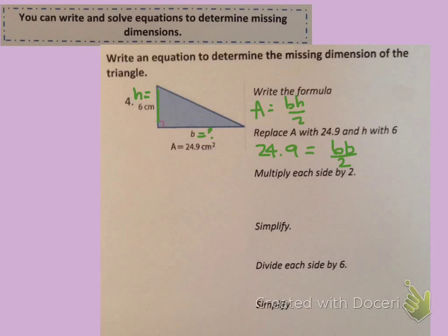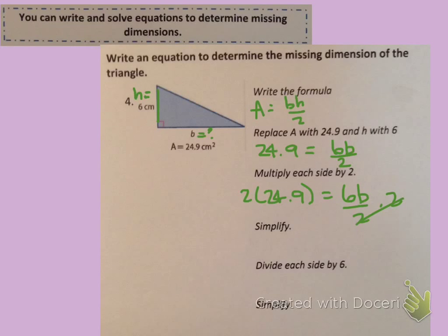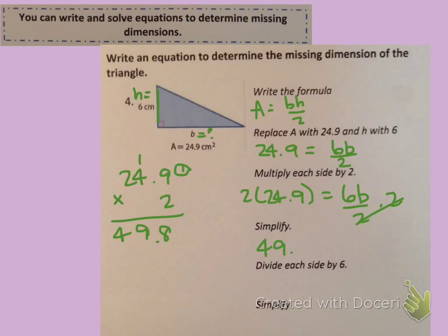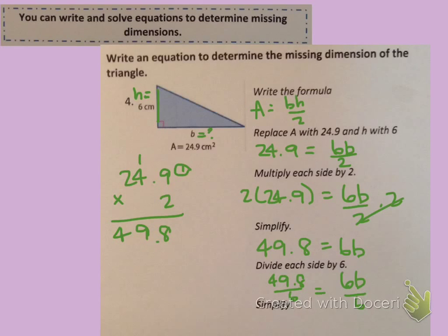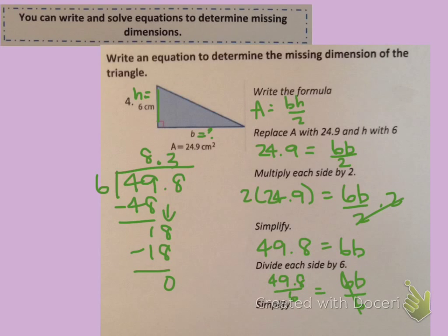To solve, I want to get the term with b by itself, so I need to get rid of the divided by 2. To do that I'm going to multiply each side by 2: 2 times 24.9 equals 6b over 2 times 2. The 2's on the right cancel out, leaving just 6b. And 2 times 24.9 is 49.8, so 49.8 equals 6 times b. Now we divide both sides by 6: 49.8 divided by 6 equals 6b divided by 6. And 49.8 divided by 6 equals 8.3.